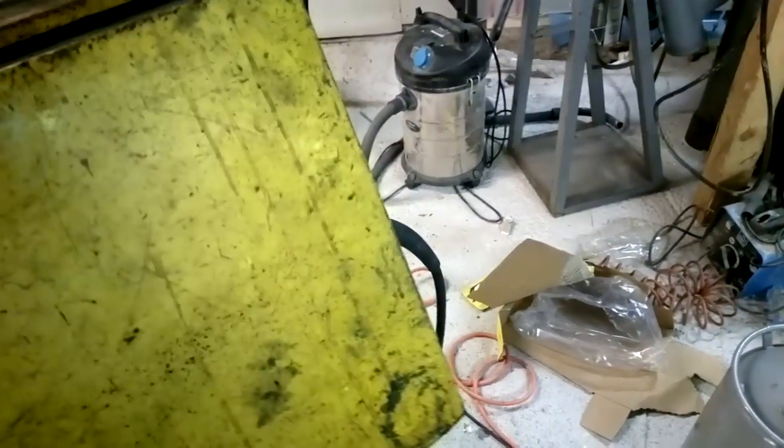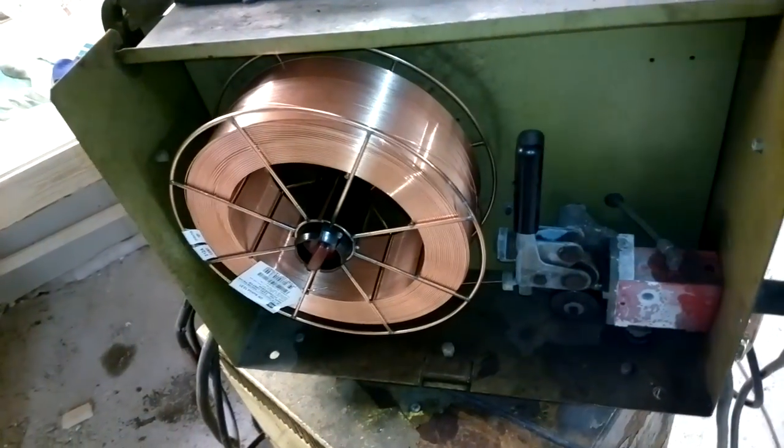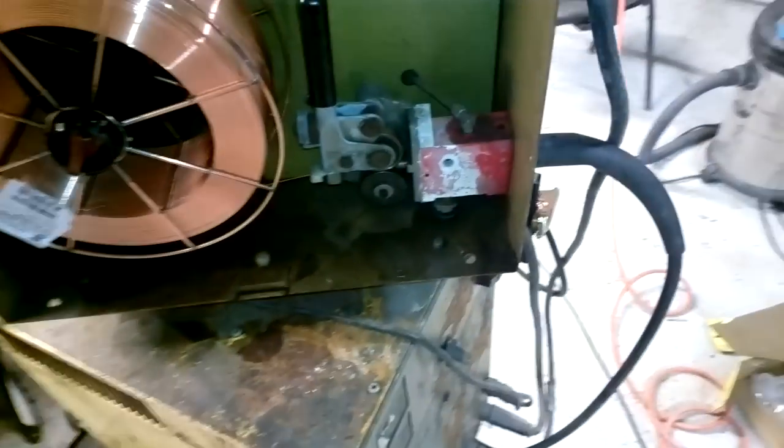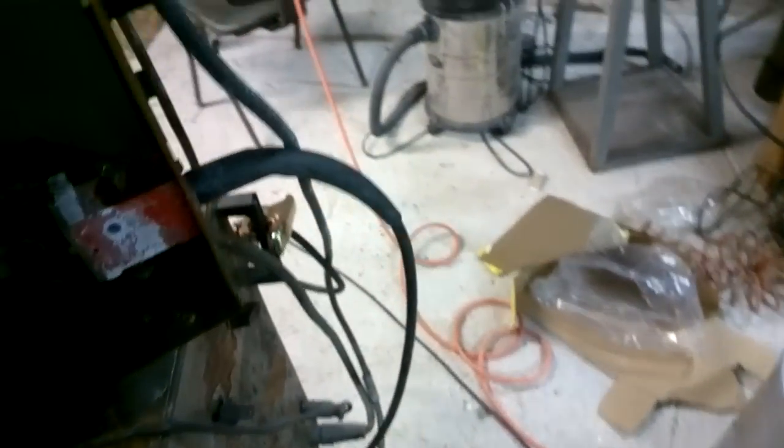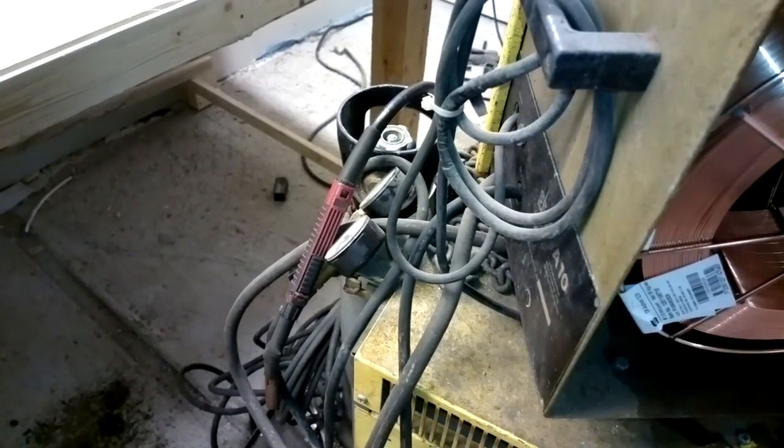And I also did something to my oldest MIG welder. I put a new nice roll of one millimeter wire on it, and I took apart the welding cable and I cleaned it completely, and the wire feeder also.